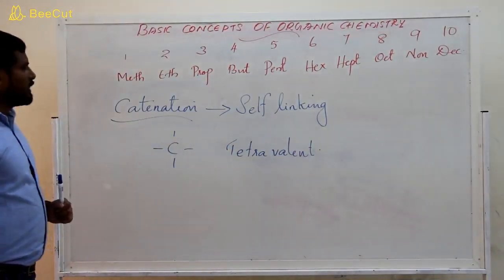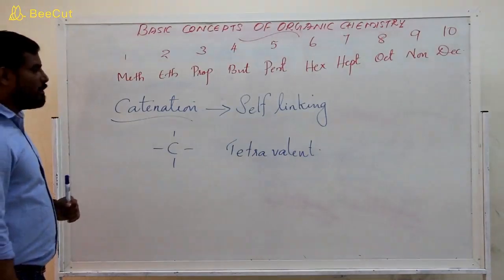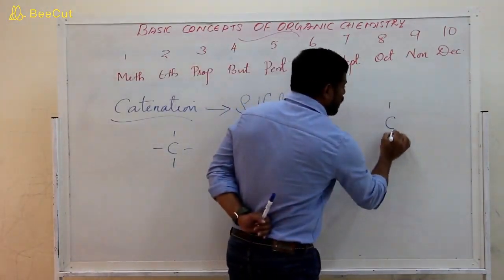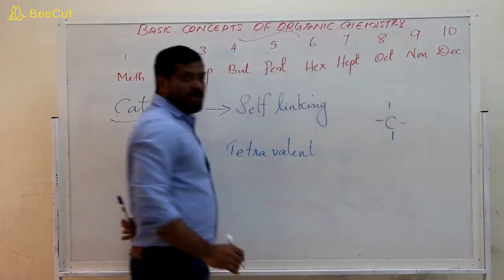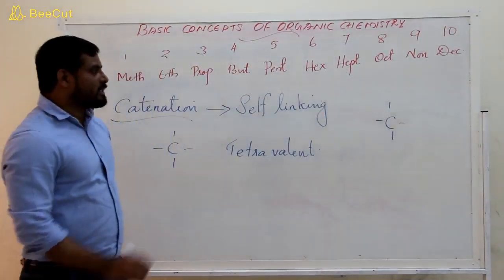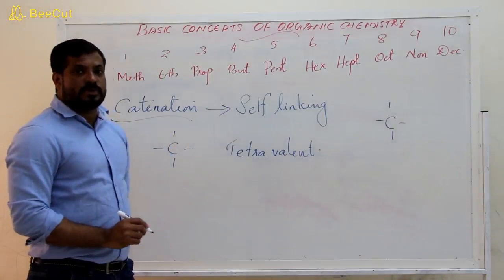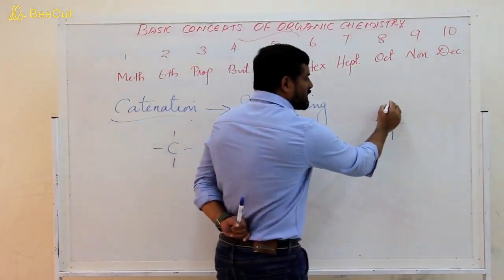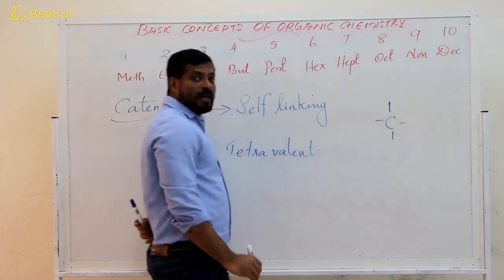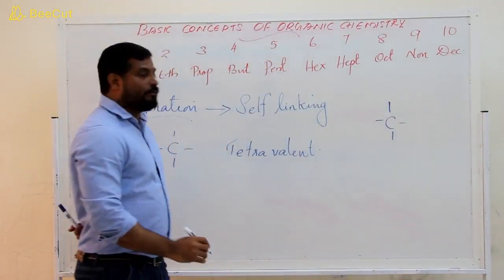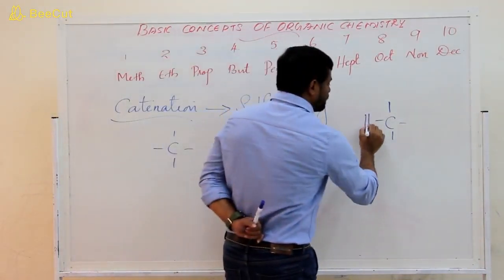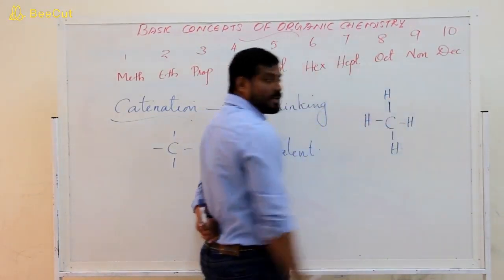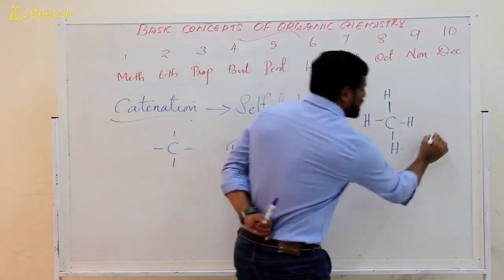Now, moving to the name of the first carbon compound. As we are discussing about hydrocarbons, hydrocarbons contain carbon and hydrogen atoms. Carbon possesses four valences, and these four valences are satisfied by four hydrogen atoms. So the first compound is CH4.